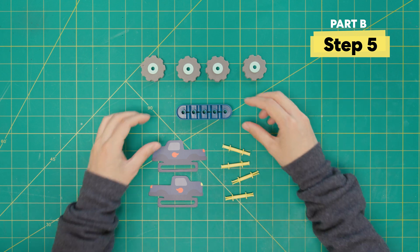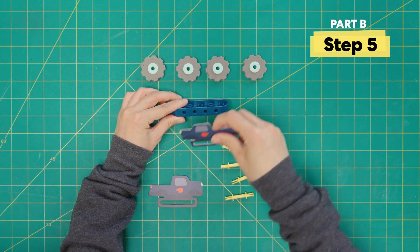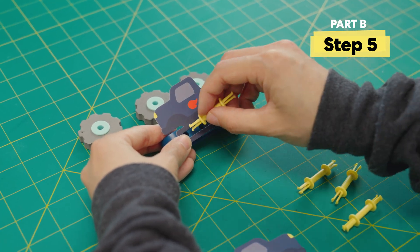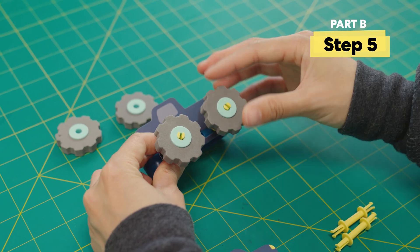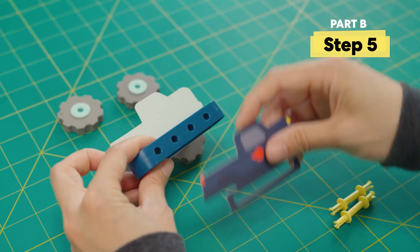Grab these additional pieces for car number two. Add the car skin. Then the yellow axles. And finally the wheels. Then we'll repeat for the other side.